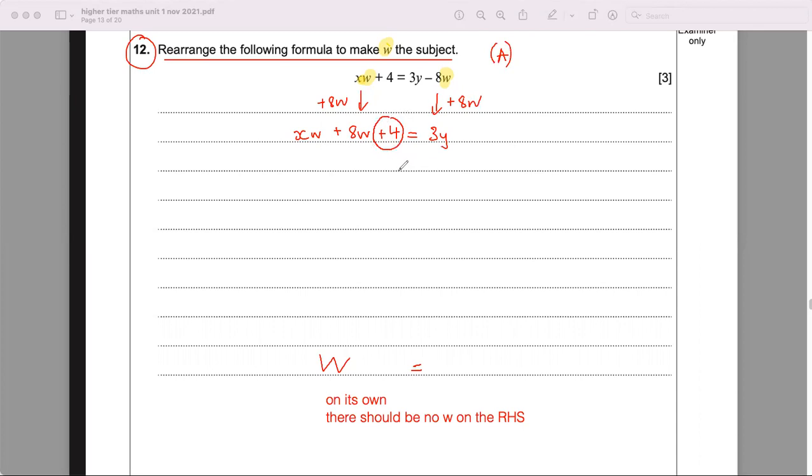Now the plus 4 is nothing to do with w and it is on the left hand side, so we want to move that to the other side. We're going to take away 4, take away 4 on both sides. You got xw plus 8w, and that's 3y minus 4.